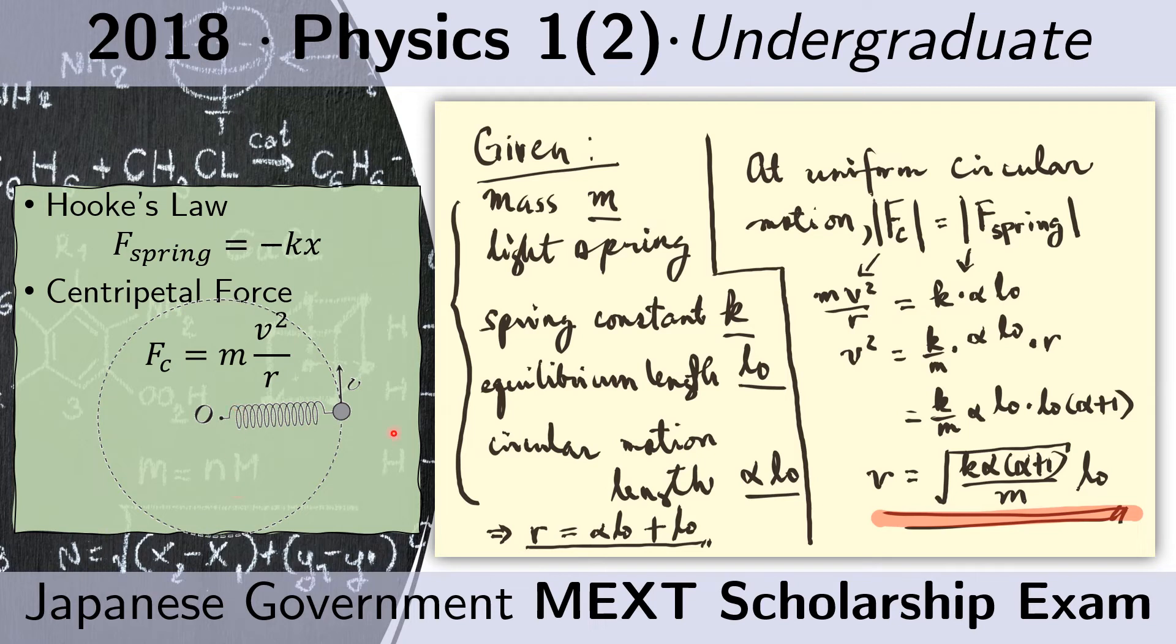And also because that is the length of the spring, that is also the length of this radius from the center to the orbit. So that's why we write here R, which is the radius of the orbit, equals this length of the spring.